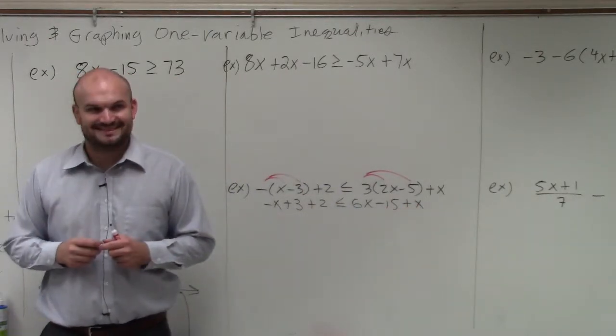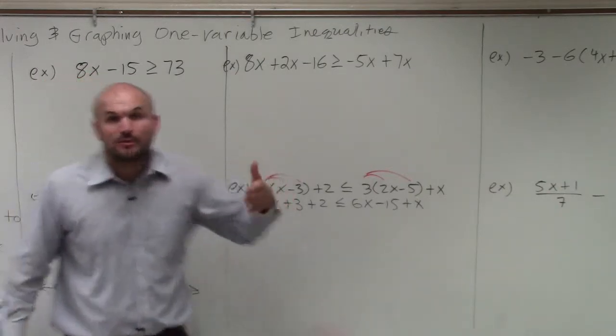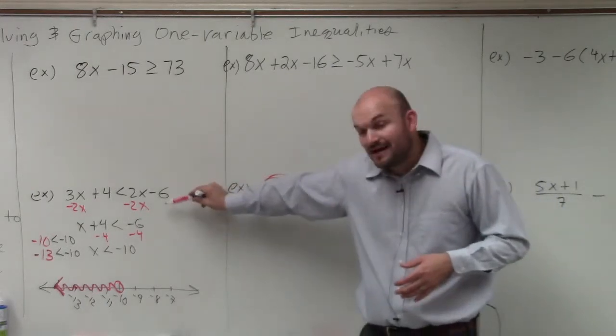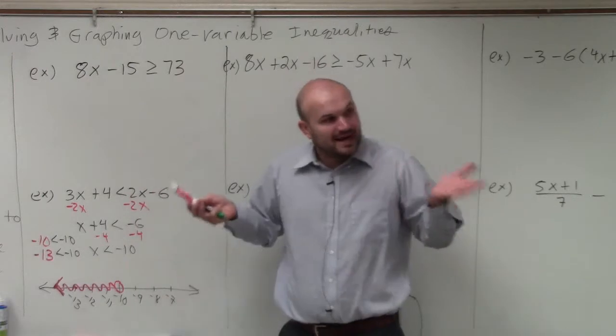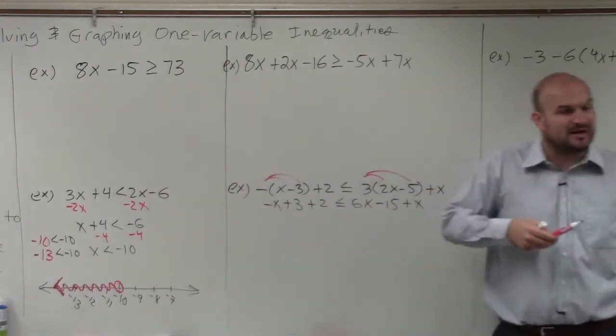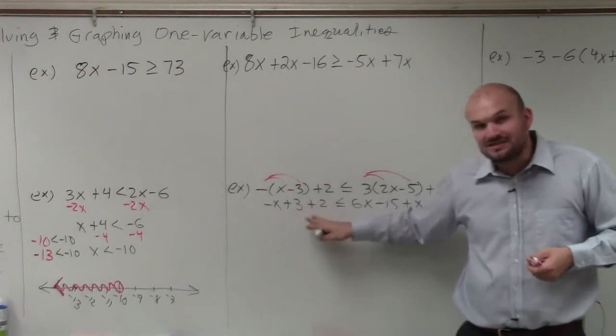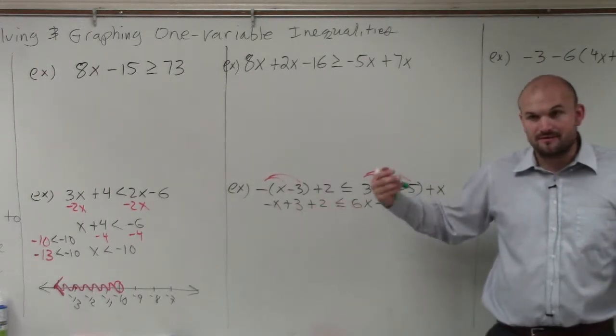Good. Now the next thing is combine like terms. We don't have to use our inverse operations here. Before, we had variables on both sides. That's why I had to use the properties of equality. I had to add whatever I subtracted on one side, I had to subtract on the other side. Here, I have two numbers that are on the same side, so I can just add them. 3 plus 2 is 5.